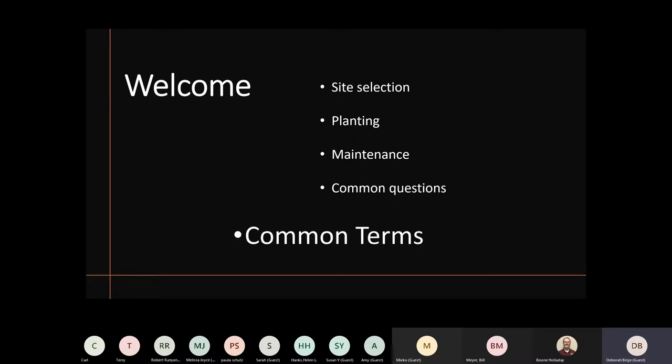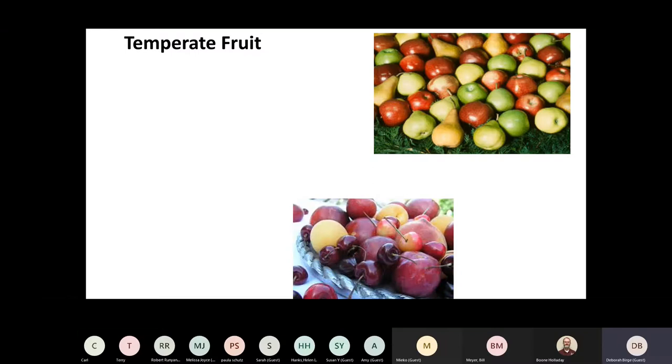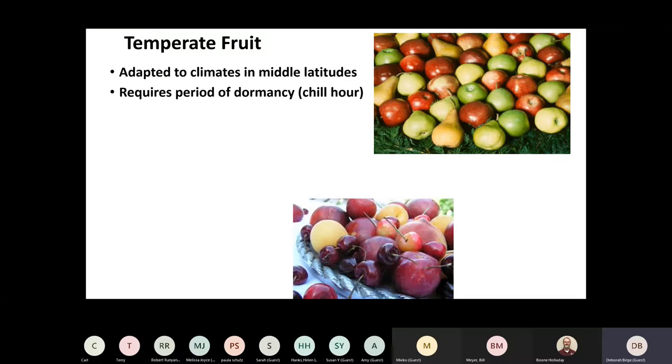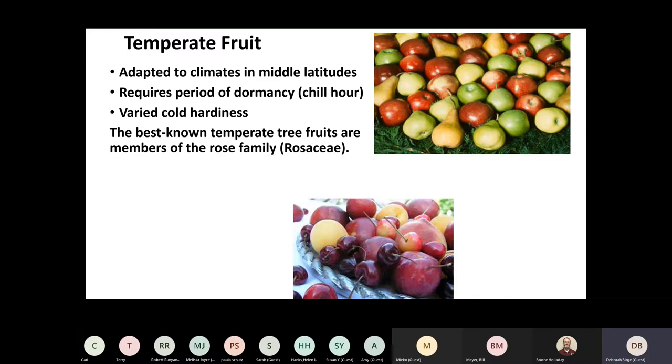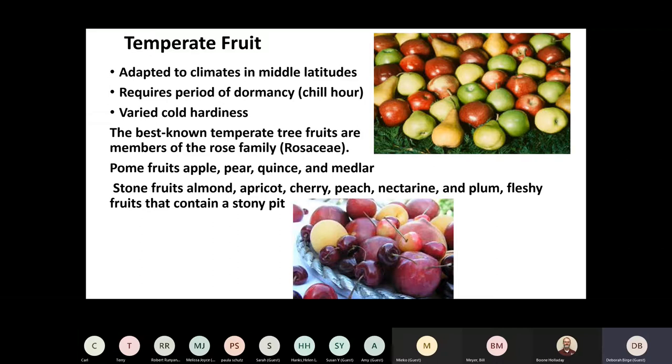So we're going to go over site selection, planting the tree, maintenance of that tree for the first three years, and then common questions and answers. The first thing we would do is go over a few terms. The first term would be temperate fruit. It is fruit that is adapted to the middle latitudes. It has a period of dormancy that is needed in order to bear fruit, and that's usually called chill hours. It has very cold hardiness. The best known ones are in the rose family.